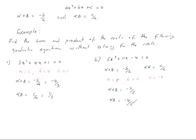For 5x squared plus 11x minus 4 equals zero: alpha plus beta equals negative b over a equals negative 11 over 5, and alpha times beta equals c over a equals negative 4 over 5. You can try to find the actual roots and verify. Let's do a sample test and find the roots of the first equation. We can use the product, which is 3, and the sum, which is 4.